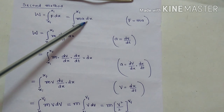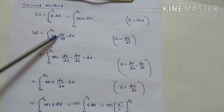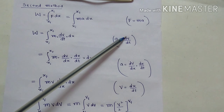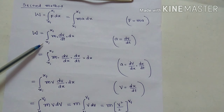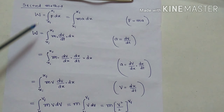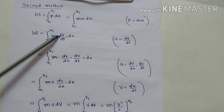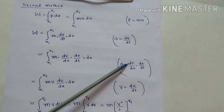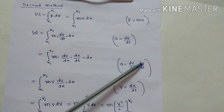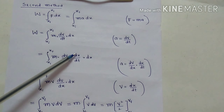So W = integral of m·a dx, from xi to xf. Acceleration a = dv/dt, the rate of change of velocity. Now I rewrite dv/dt using the chain rule: dv/dt = (dv/dx)·(dx/dt), because the dx terms cancel and we get back dv/dt.